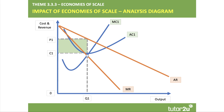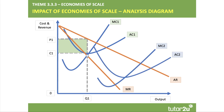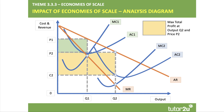With economies of scale, the scale of production can increase, allowing a firm to move onto lower cost curves — for example MC2 and AC2. That allows the profit-maximizing firm to produce a higher output Q2 and charge a lower price P2. The cost per unit falls, and the new level of profit is higher, so the business benefits from economies of scale by making a higher profit even while charging a lower price.